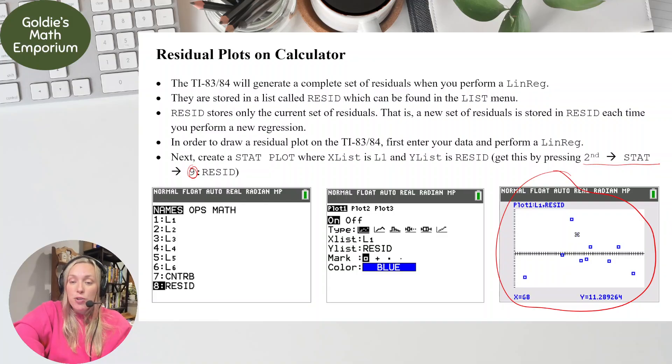And then when you press trace, you'll get the X value and the residual. So the residual we did when a student got a grade of 68, the residual we found, here it is. And that's represented by this point right here. So that's a good way to get the residual plot and then to also see all the residuals too. You can trace and click through and you can see all the residuals for the X values.